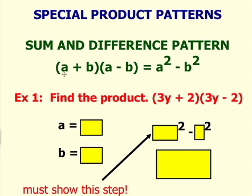You should notice that your first term of the binomial is the same, however the second terms are opposites. Here we have plus b, here we have negative b.